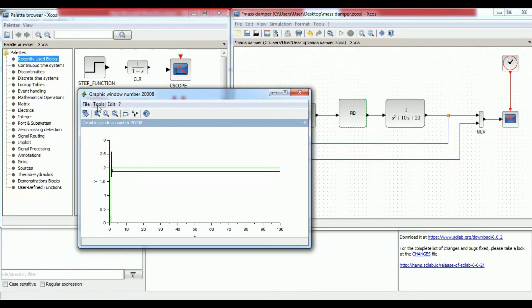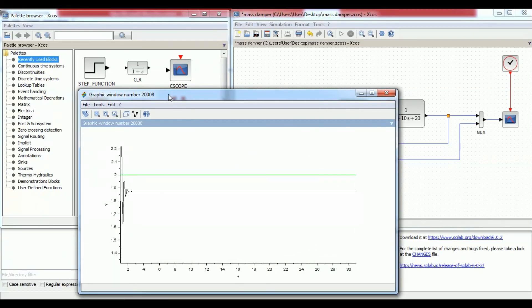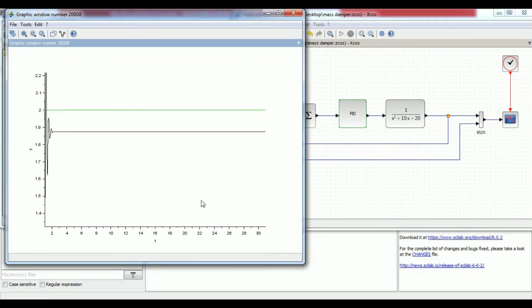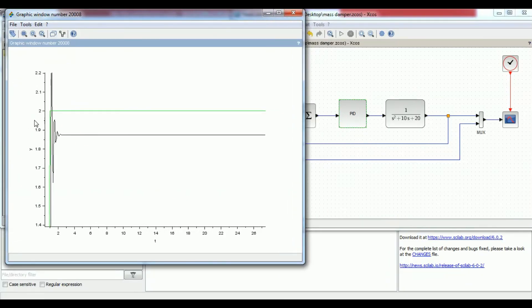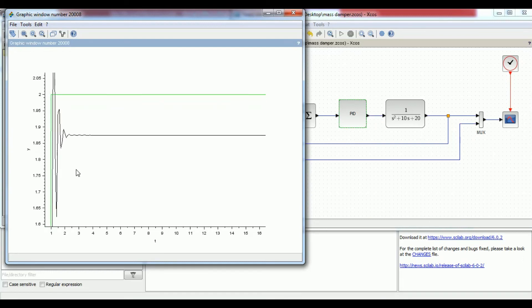Let us zoom it you can see the change into the response curve. Response curve now again I am going to modify it see for the kp value of 200 you can see the change into the response curve.